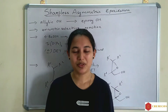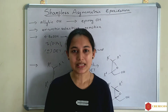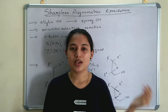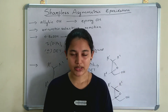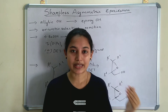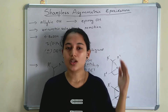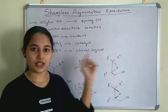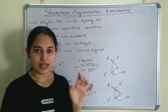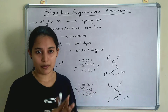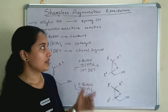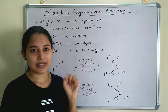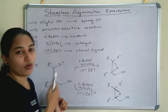Hello everyone, welcome to Chemicals Academy. This is the Part 2 video of Epoxidation. In Part 1, we discussed the basic concepts of epoxidation and the factors affecting the rate of epoxidation reactions. In this Part 2, we will see what is Sharpless asymmetric epoxidation. Sharpless asymmetric epoxidation is an advanced level epoxidation reaction — chirality is present.